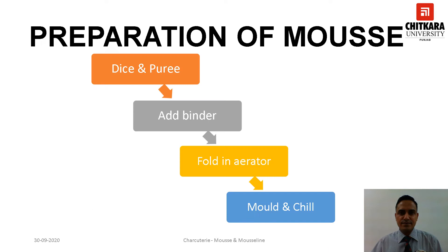The steps involved in the preparation of Mousse are as follows: First, dice the meat and process to a fine paste in a blender. Then add cold béchamel or cold velouté, aspic, and seasoning, and mix everything together. Then fold in the whipped cream — the mixture is now ready. Spoon the mixture into molds and chill. Once it is chilled and set, serve with appropriate garnishes.